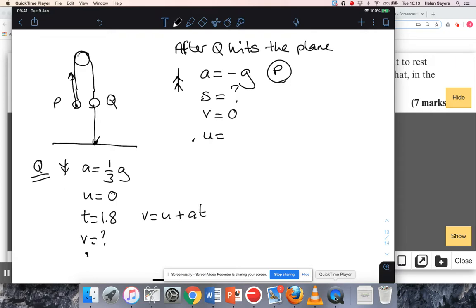So I can use v equals u plus at. So v is zero plus a third g times t. Again, I want my final answer to be in terms of g, so I want to leave that. So a third times 1.8 is 0.6, and 0.6g. That is going to become the initial velocity for this part of the journey.